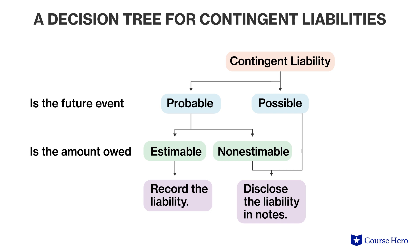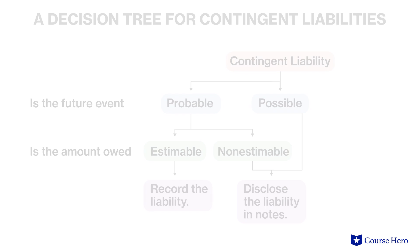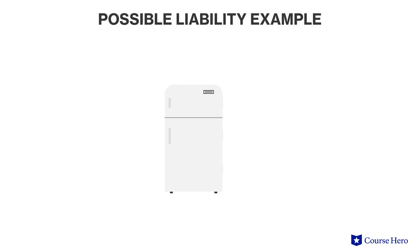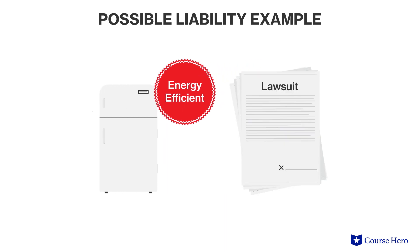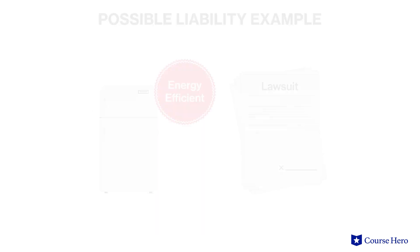For example, J Company sells refrigerators with claims of being energy efficient. Customers complain that this is not true and sue the company. This lawsuit could possibly result in a liability depending on the court decision and the amount of the damage award.